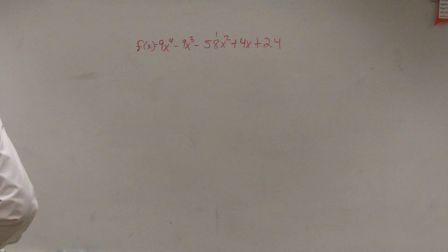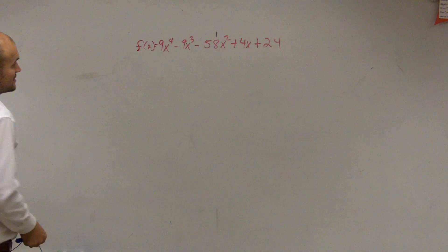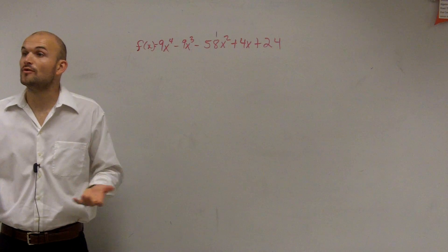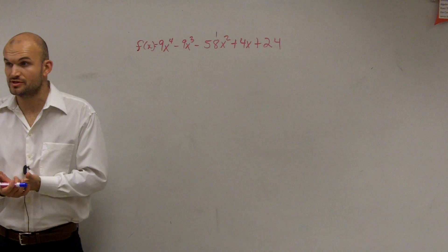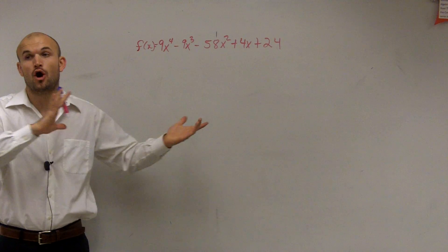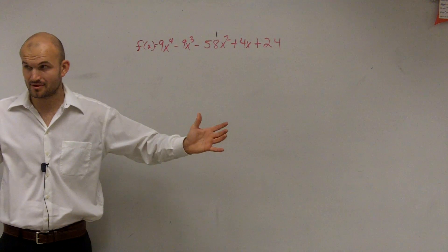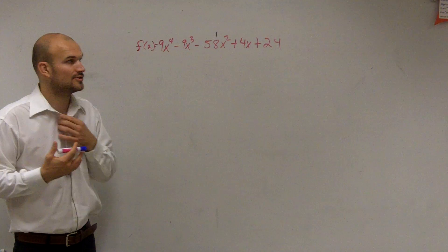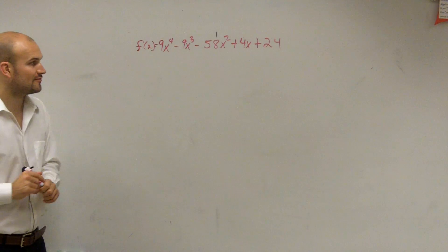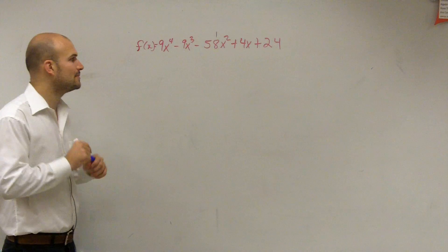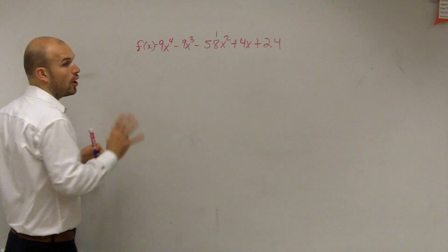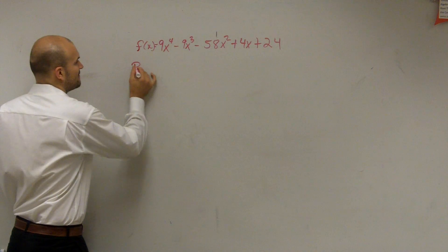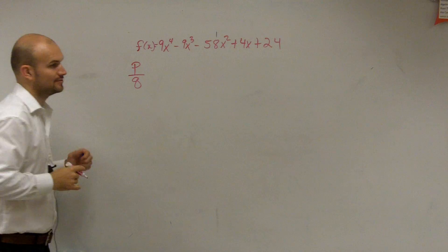Ladies and gentlemen, the first thing when doing a problem like this is it asks us to first list all the possible rational zeros. So what I'm going to do is just list them all out. Once you get used to it and understand what we're doing, you can start breaking them down. But remember, to find all the possible rational zeros, that's going to be the factors of p over q.